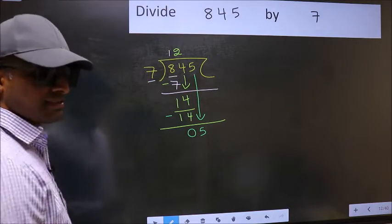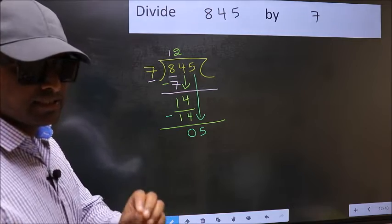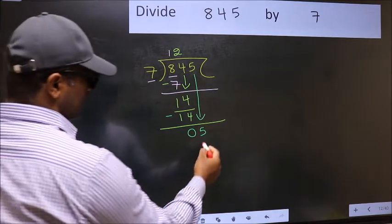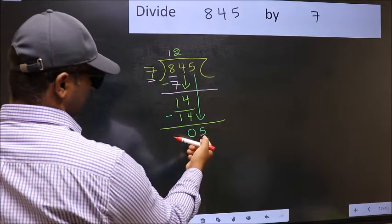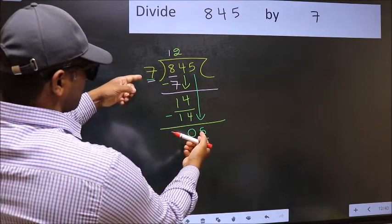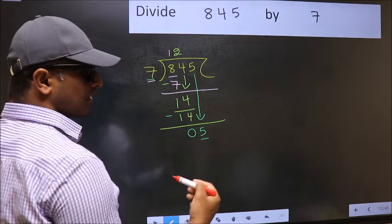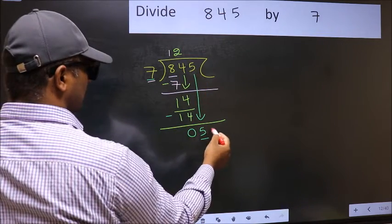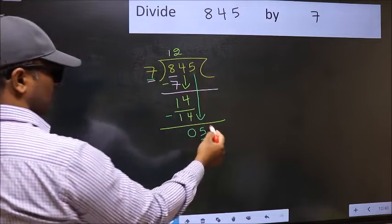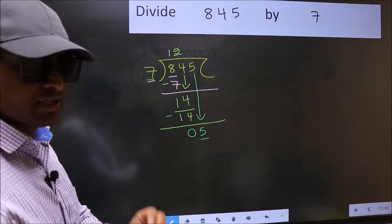After this step, the mistake happens. And the mistake is this. Here we have 5, and here 7. 5 is smaller than 7. So what many do is, they directly put dot and take 0. Which is wrong.